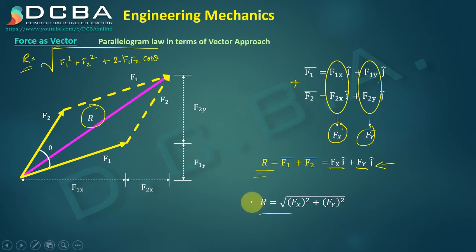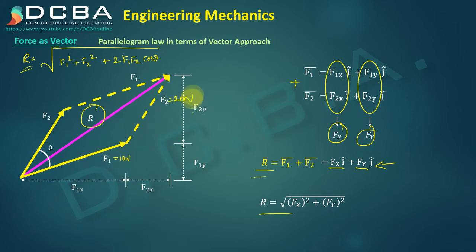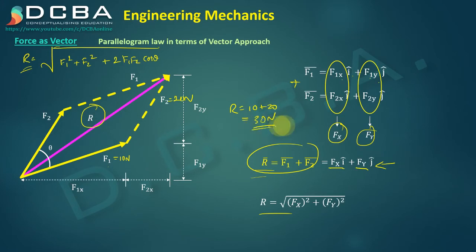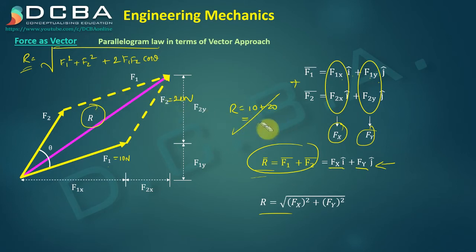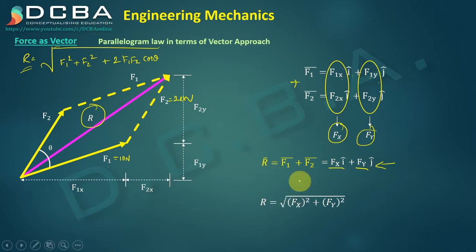One common mistake students make: if F1 is 10 N and F2 is 20 N, they see R equals F1 plus F2 and write R equals 30 N. This is wrong. You cannot simply add the magnitudes of two forces. You must first represent each force in its vector form and then add them.